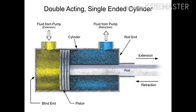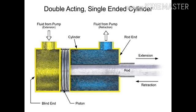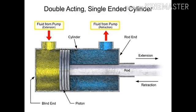A double-acting cylinder is a cylinder in which fluid acts on both sides of the piston. This type of cylinder can produce linear motion in two directions. A double-acting cylinder has two fluid ports, one on the blind end and one on the rod end.